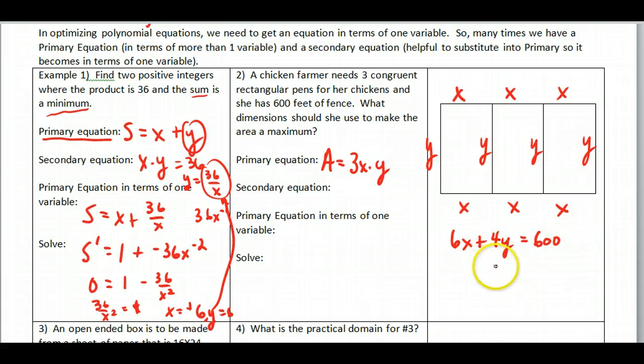And if we solve this for y, and then I can take this and simplify it a little bit. So my secondary equation is going to be y is equal to 600 divided by 4 is 150, and then 6 divided by 4 is 3 halves. Now my primary equation in terms of all one variable, I'm going to take out this one here and replace it with this here.